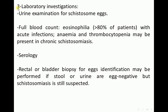Laboratory investigations include urine examination for detection of Schistosoma hematobium eggs, and full blood count. Eosinophilia can be detected in this infection — with chronic schistosomiasis, more than 80% of patients have eosinophilia.